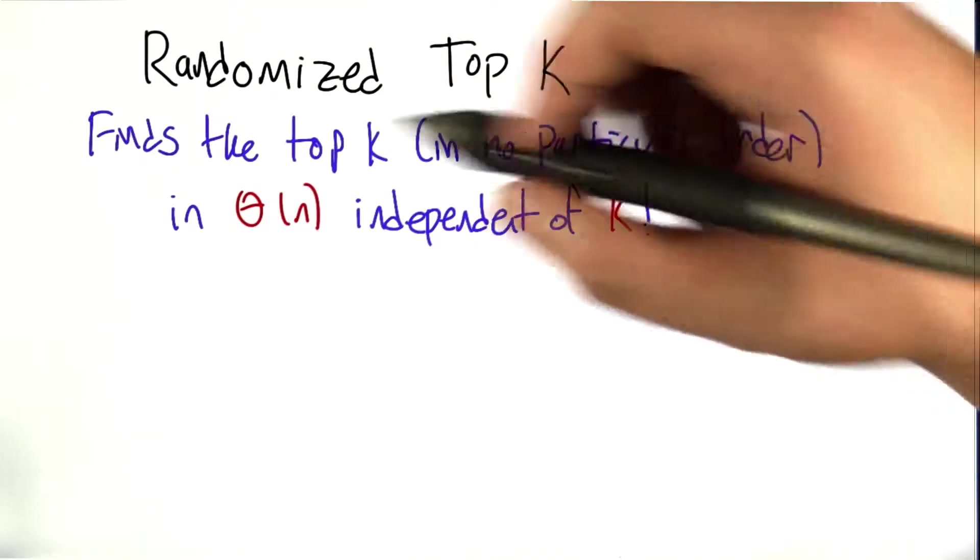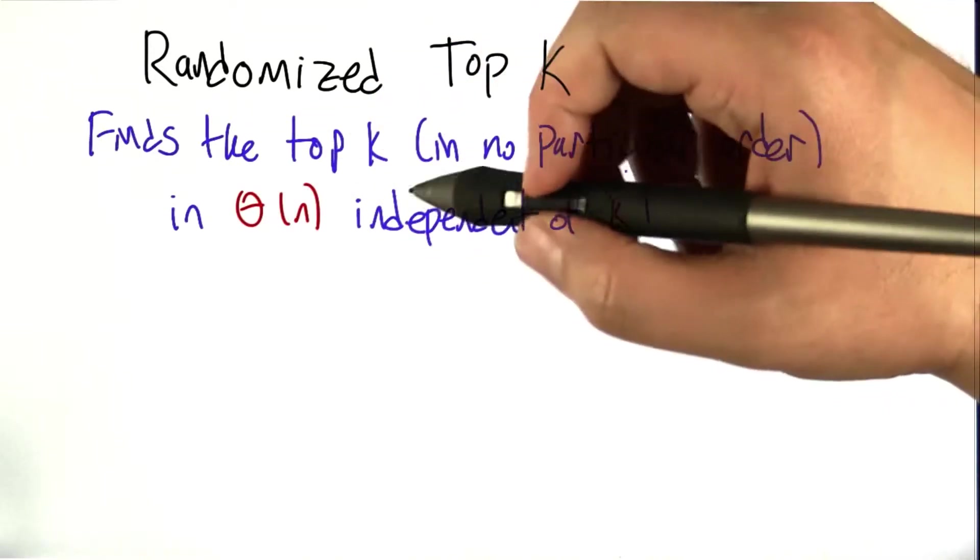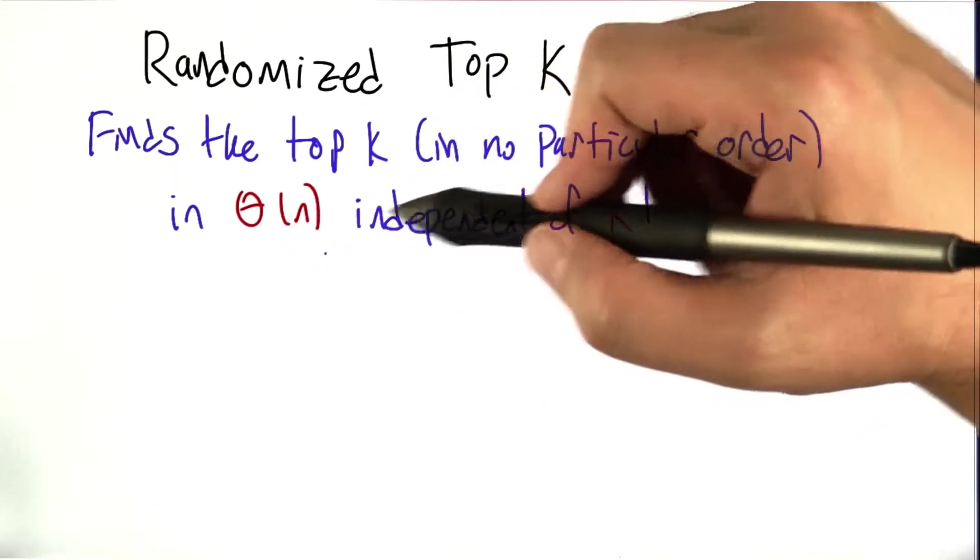Now what's cool about this algorithm is it finds the top k elements in no particular order in big theta of n time independent of k.